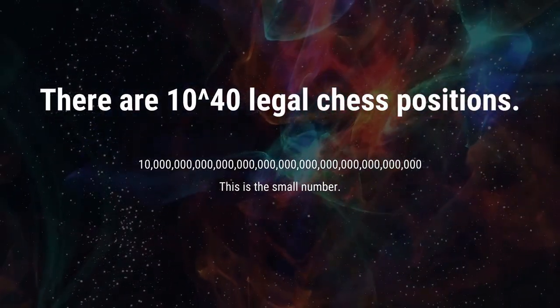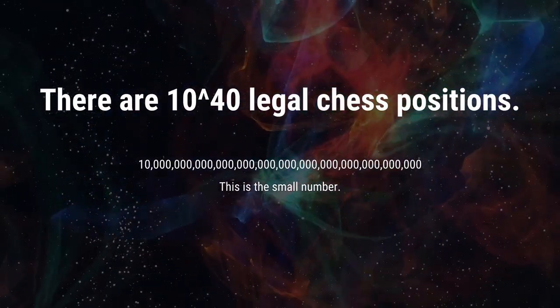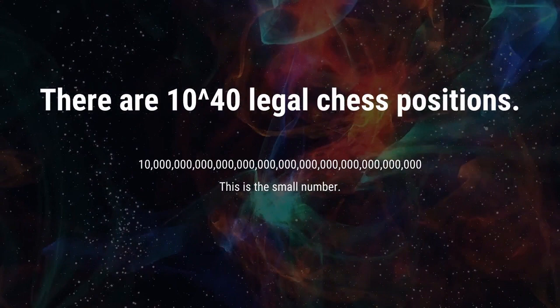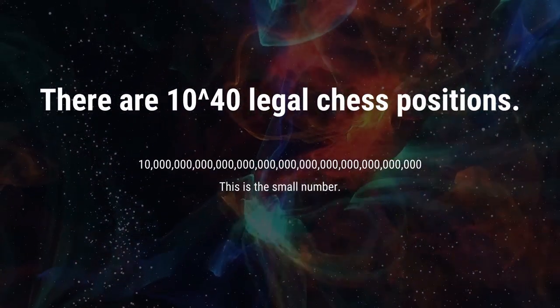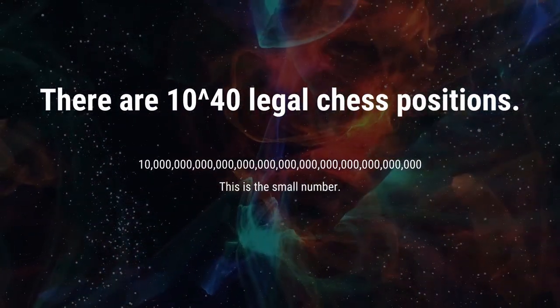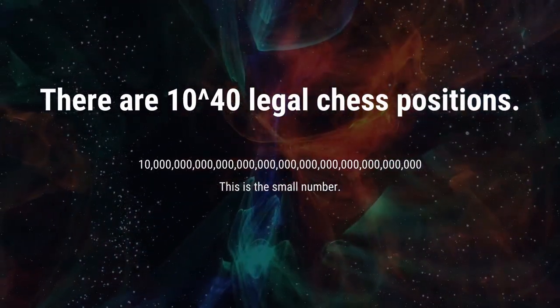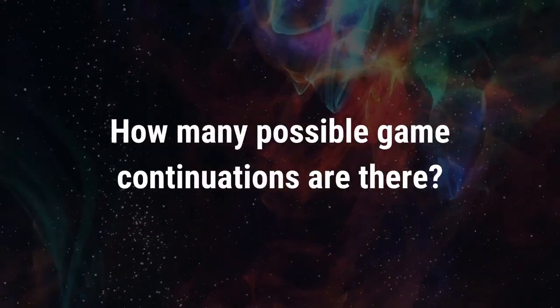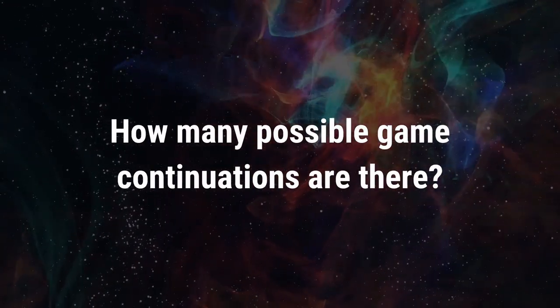That means a 10 followed by 39 zeros. Remember, this is just a small number. The bigger number is how many possible games can be played. So, how many are there?